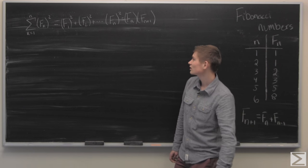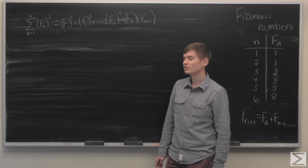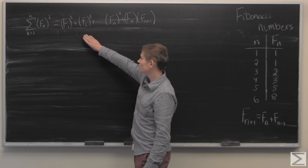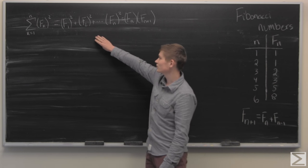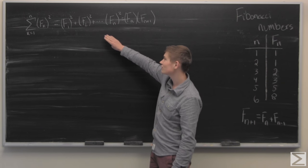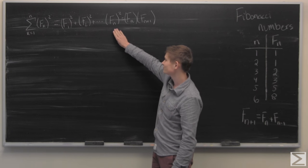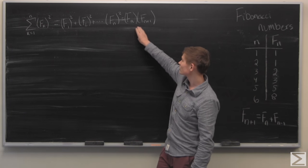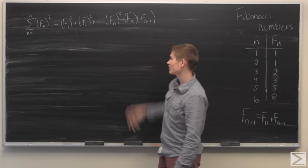Today I'll be going over a relation with the Fibonacci numbers, which is if you sum the squares of the Fibonacci numbers up to n, this is equal to the product of the nth Fibonacci number and the n plus 1th Fibonacci number.